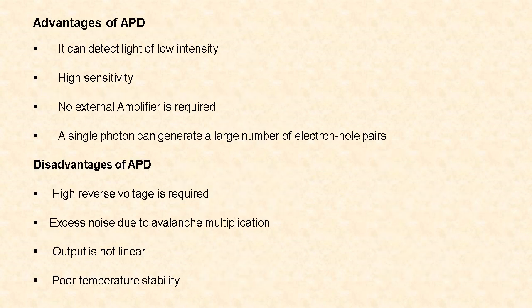The advantages of avalanche photodiode are: it can detect light of low intensity; it has high sensitivity; no external amplifier is required because it has internal gain; and a single photon can generate a large number of electron-hole pairs due to avalanche multiplication. The disadvantages are: a very high reverse voltage is required; excess noise occurs due to the avalanche multiplication process; the output is non-linear; and it has poor temperature stability.